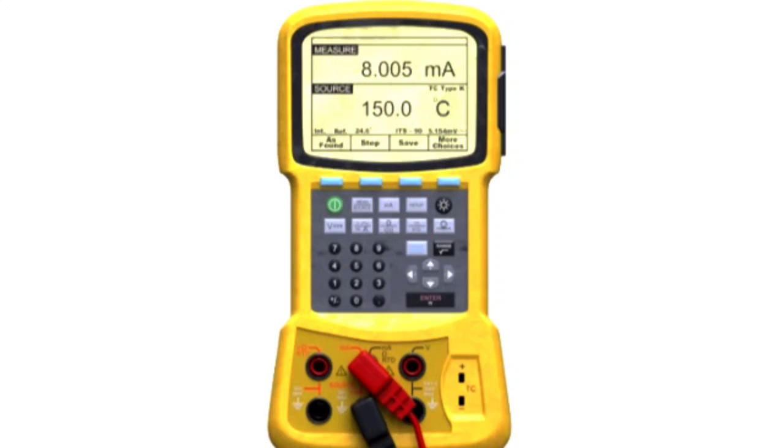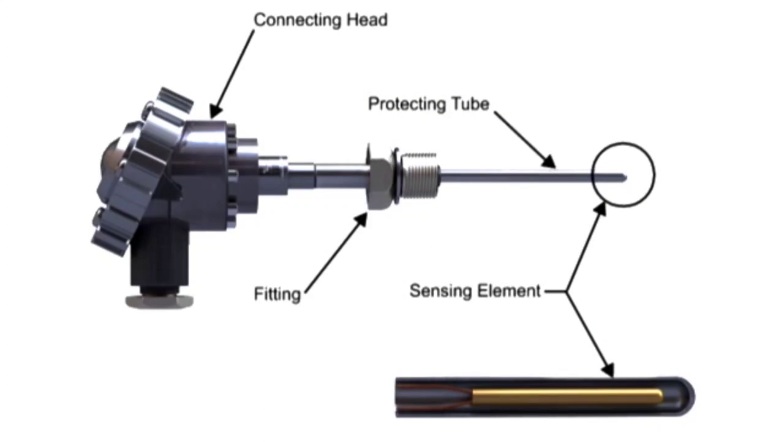Process calibrators are used by technicians to measure and calibrate sensors and transmitters. Using an RTD, or Resistance Temperature Detector, as an example, the initial step of calibration is verifying the accuracy of the temperature sensing device.